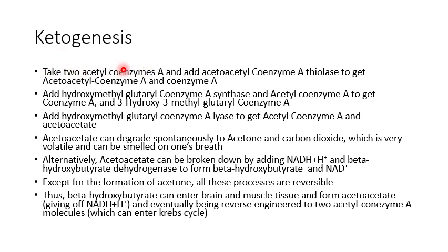We're going to take two acetyl coenzyme A's and add acetoacetyl coenzyme A thiolase, and in the end what we get is acetoacetyl coenzyme A and free coenzyme A. What we've basically done is taken the acetyl component of one molecule and added it onto another acetyl coenzyme A. Then we add hydroxymethylglutaryl coenzyme A synthase along with another acetyl coenzyme A, adding this onto the acetoacetyl coenzyme A to end up with free coenzyme A and 3-hydroxy-3-methylglutaryl coenzyme A - we've taken another acetyl coenzyme A and plonked its acetyl group onto the molecule.